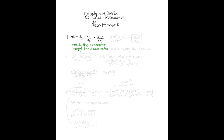The first thing we want to do is multiply the numerator, multiply the denominator, and then simplify the results. So we multiply the numerators: we have x minus one times the quantity x plus three, all over four x times the quantity x minus one. Now we simplify — we remove both x minus one factors since they go to one, and we're left with x plus three over four x as our simplified answer.